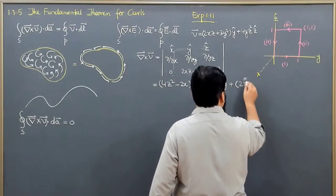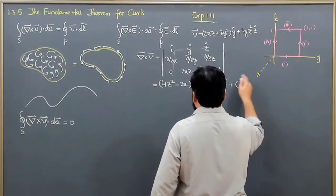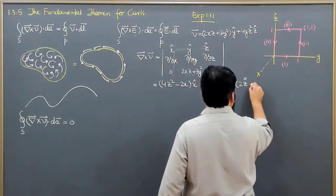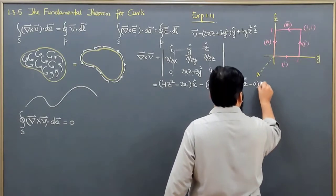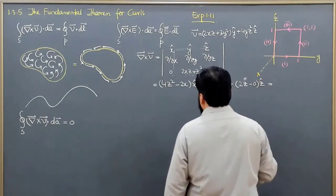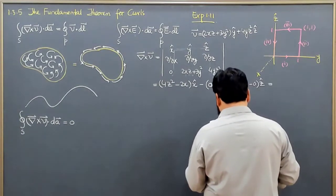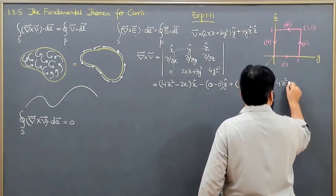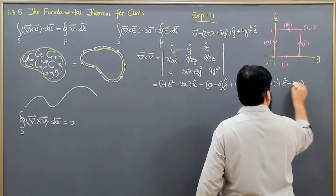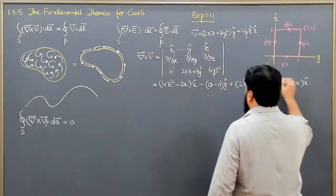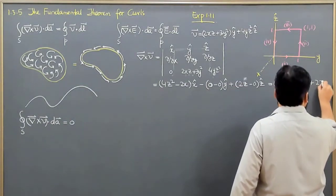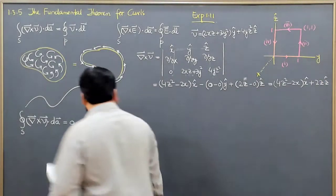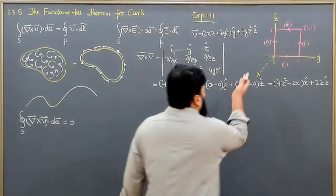This term is not here, but 2z is here, and because we have cancelled this one, this is equal to minus 0 in the z axis. So this gives us that our x component is equal to 4z squared minus 2x in the x direction, plus 2z in the z direction. This is del cross V.